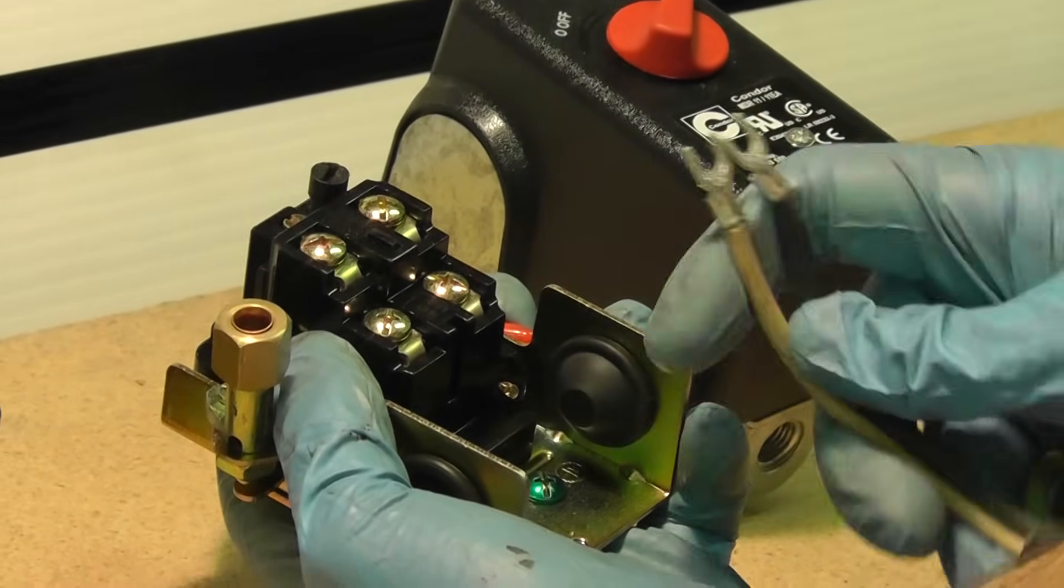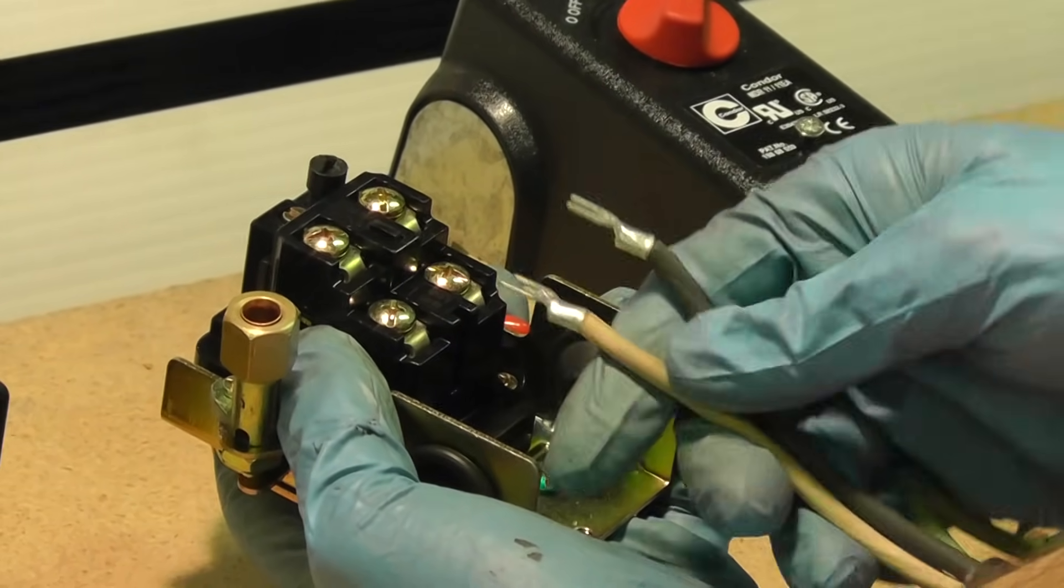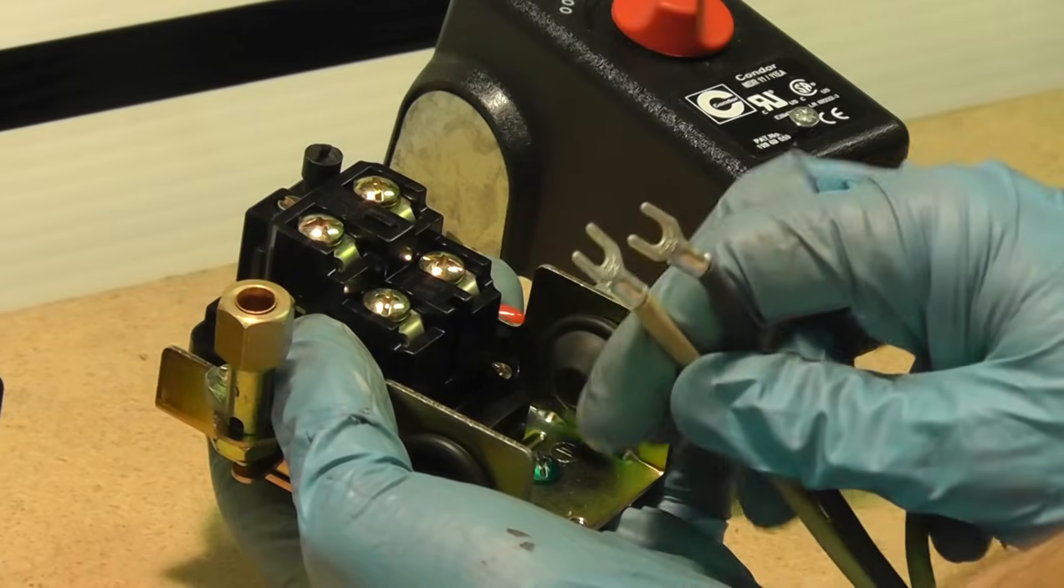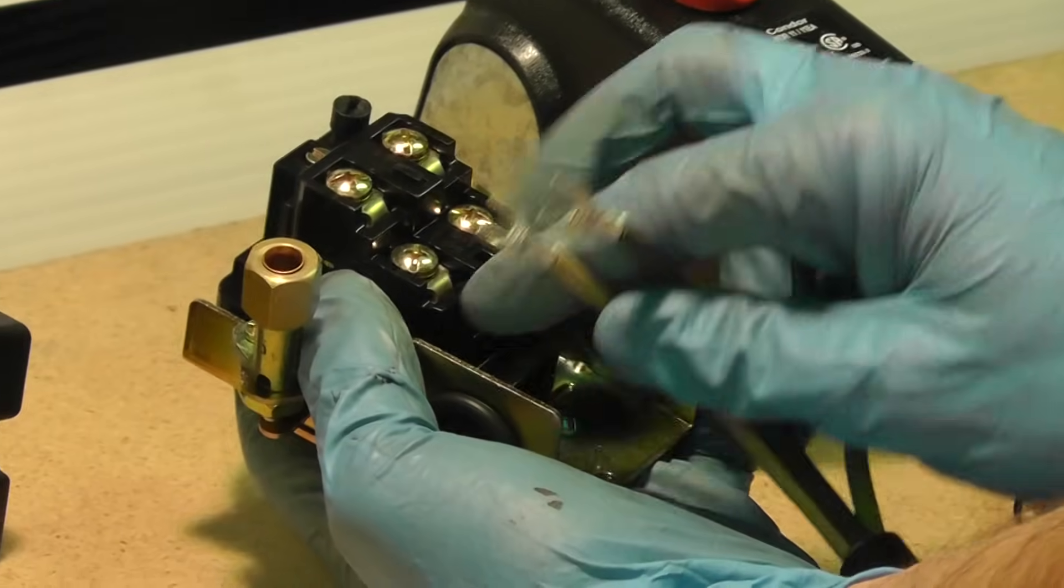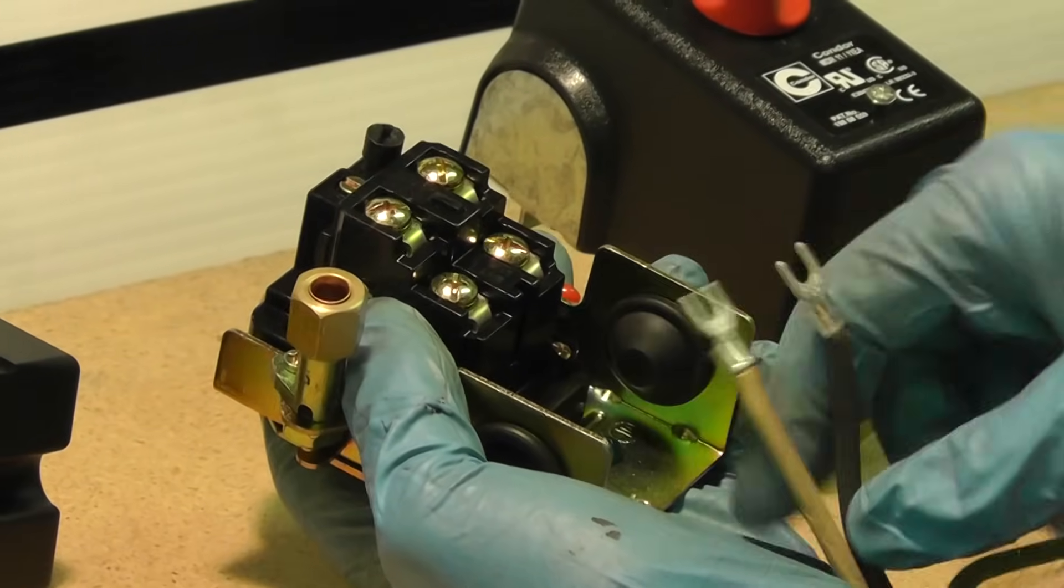It does not matter which black and white go where on the line blocks, as long as you do have black and white from the power cord going into the line terminals. It doesn't matter if it's black or white.